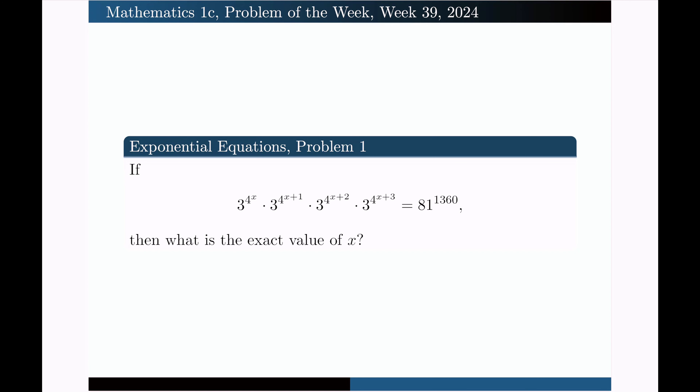Hello, in this video I'm going to solve the following problem for you. This is a problem on the topic of exponential equations. If 3 to the 4 to the x, times 3 to the 4 to the x plus 1, times 3 to the 4 to the x plus 2, times 3 to the 4 to the x plus 3 equals 81 to the power of 1360, then what is the exact value of x?